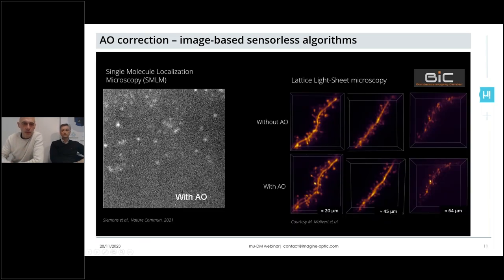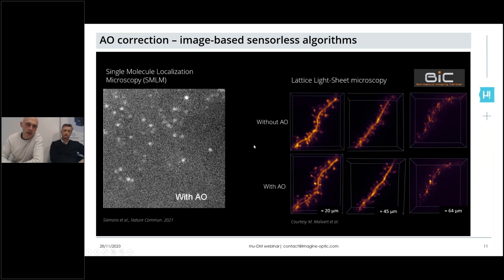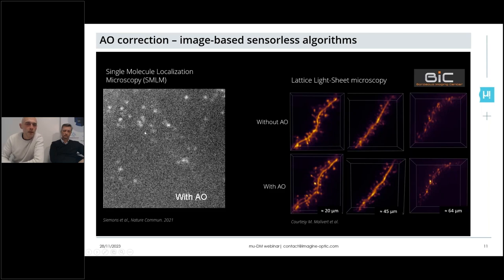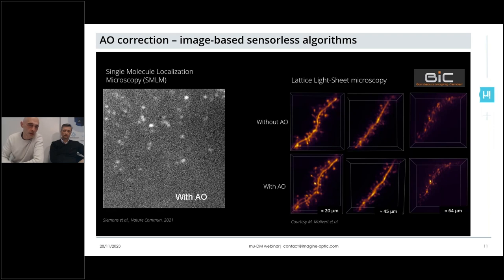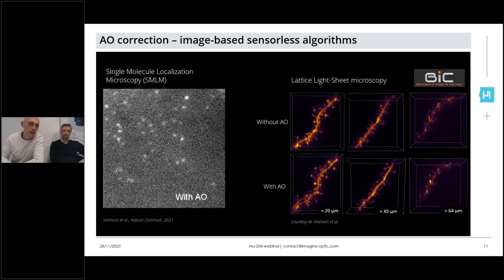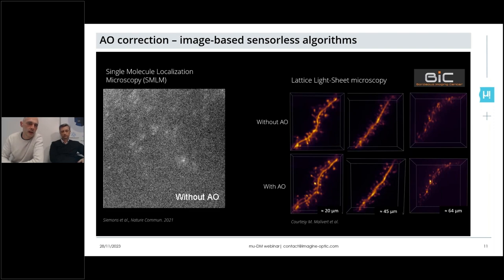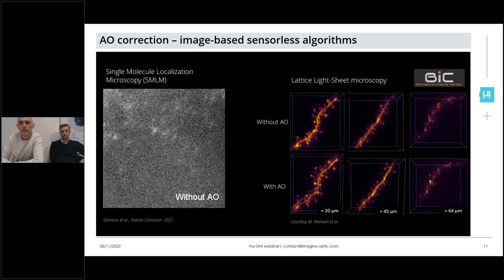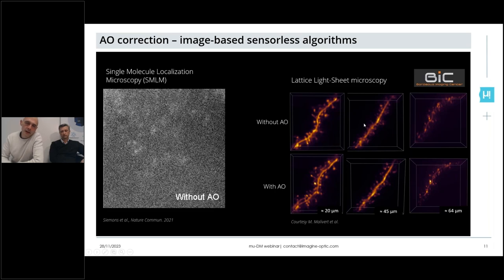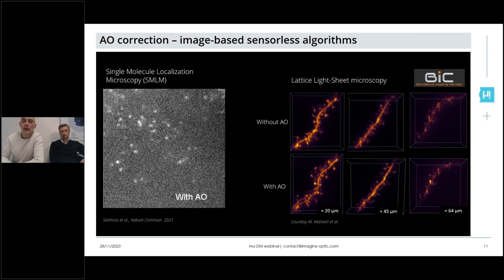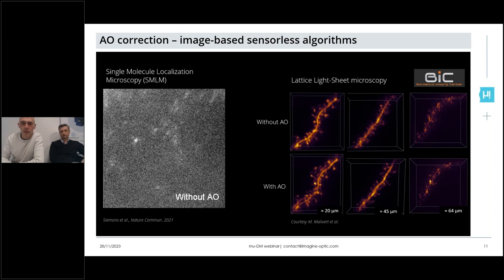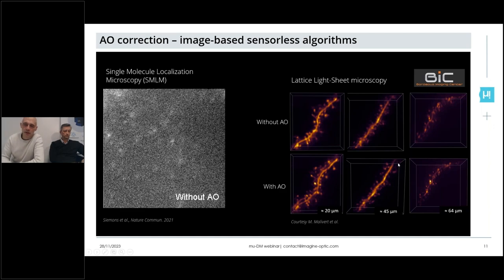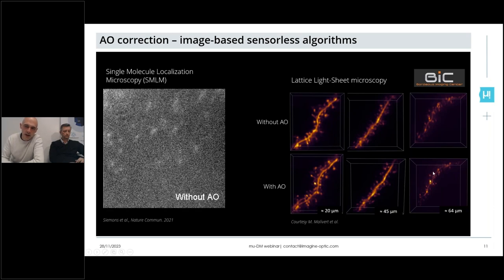Here are a couple of examples done with collaborators using our set of adaptive optics components. On the left, a movie shows the typical point spread function acquired through single-molecule localization microscopy: without adaptive optics you see a strongly distorted PSF, and with adaptive optics the circular shape of a good PSF is retrieved, which strongly increases the localization precision. On the right, adaptive optics integrated into the detection path of a lattice light sheet microscope shows the effect of aberration correction in depth on brain organoids, with increase in signal and resolution particularly for small structures like dendritic spines.